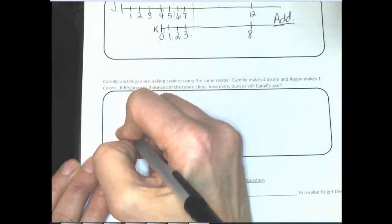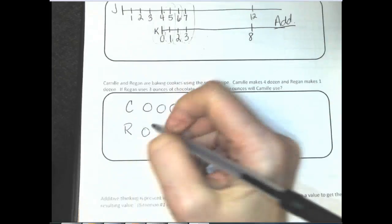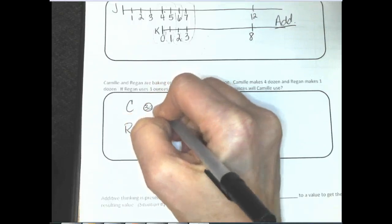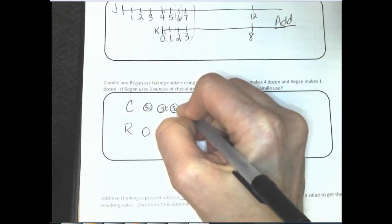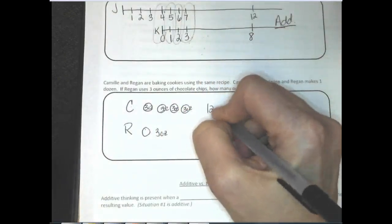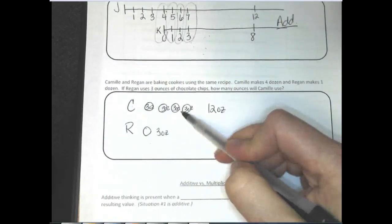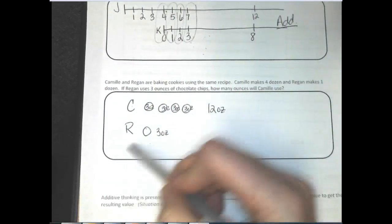Camille and Reagan are baking cookies using the same recipe. Reagan makes four dozen, and Camille makes one dozen. If Reagan uses three ounces of chocolate chips, how many ounces will Camille use? For the one dozen, Reagan uses three ounces of chocolate chips. Every one of her dozens is going to take three ounces — three ounces repeated four times would be 12 ounces. This is a multiplicative relationship because I multiplied the three ounces for one recipe times the number of dozens of cookies she made to get 12 ounces.